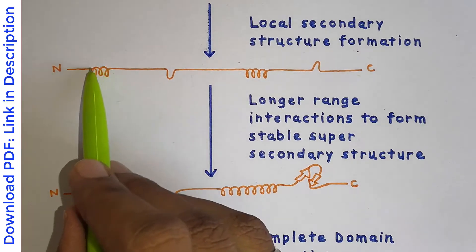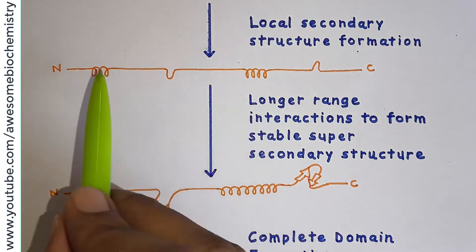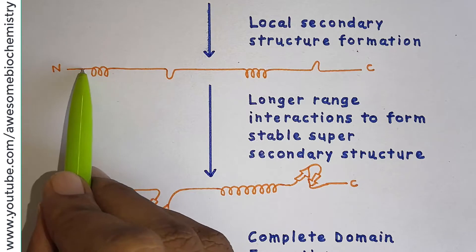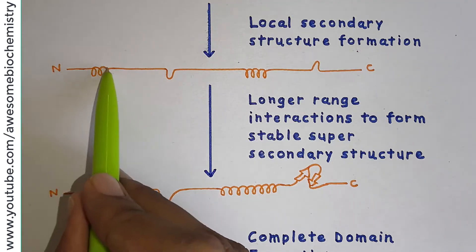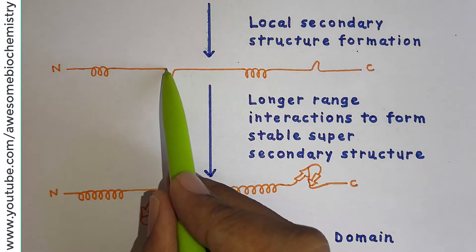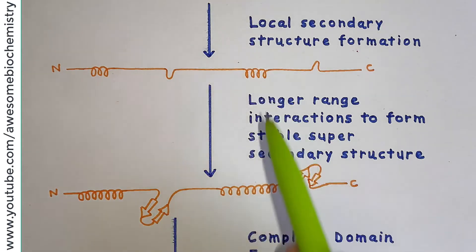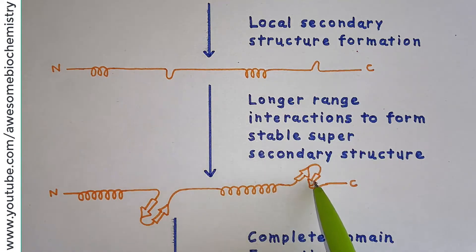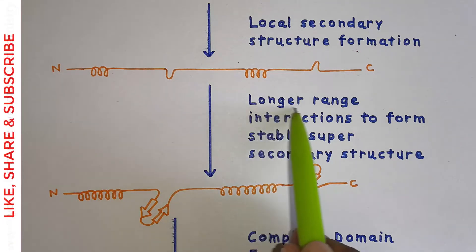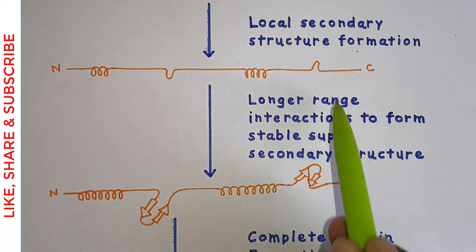In the second step, whatever local secondary structure is formed, it starts expanding by taking up nearby amino acid sequences. As you can see in the lower diagram, the short helix becomes a long helix, the loop involves nearby polypeptide chain to form beta strands, and similarly the other helix becomes longer and forms beta strand–loop–beta strand arrangements. This represents longer-range interactions forming stable super-secondary structure.